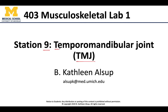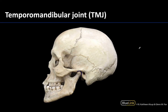The TMJ gets its name from its bony parts. We are going to have the mandibular condyle of the mandible articulating with the mandibular fossa, which is inferior here at about the level where the dashed blue line is.